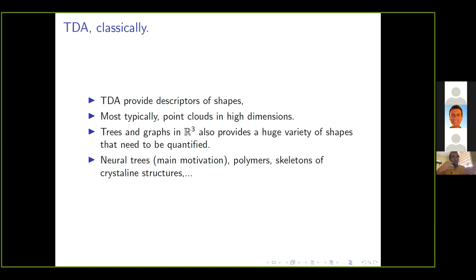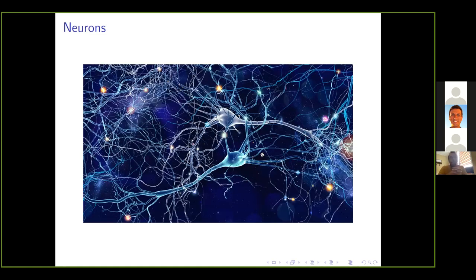Those families of trees and graphs embedded provide a huge variety of shapes that need to be classified and quantified in many cases. My main motivation throughout the talk will be neural trees, but I really hope these techniques may serve as an inspiration or a tool for some of the problems in material science. My initial motivation to work in this topic came from neuroscience. If you look at our brains, there are neurons, and those neurons have different functionality.